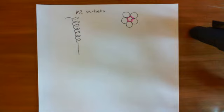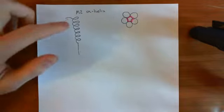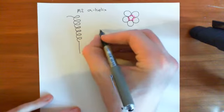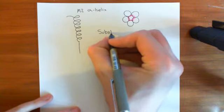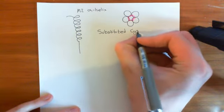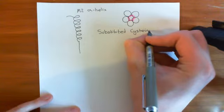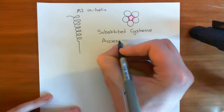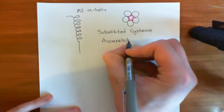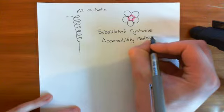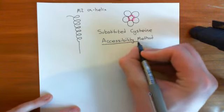We can use a technique known as the substituted cysteine accessibility method in order to work out which of the amino acids in this polypeptide actually face into the pore. This method makes use of the fact that the cysteine amino acid is the only amino acid to have a thiol group on it, and the entire method totally revolves around cysteine.